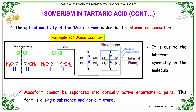The optical inactivity of the meso isomer is due to internal compensation — it is due to the inherent symmetry in the molecule. The meso form cannot be separated into optically active enantiomeric pairs. This form is a single substance and not a mixture.